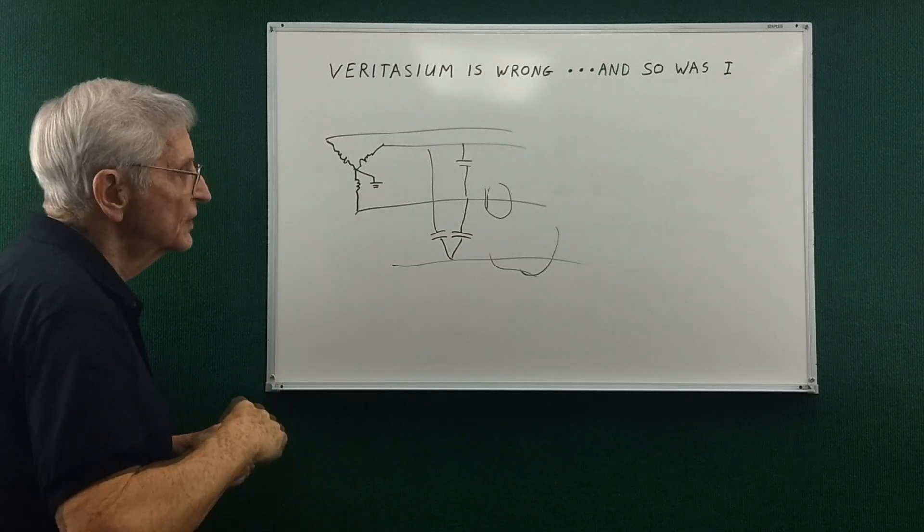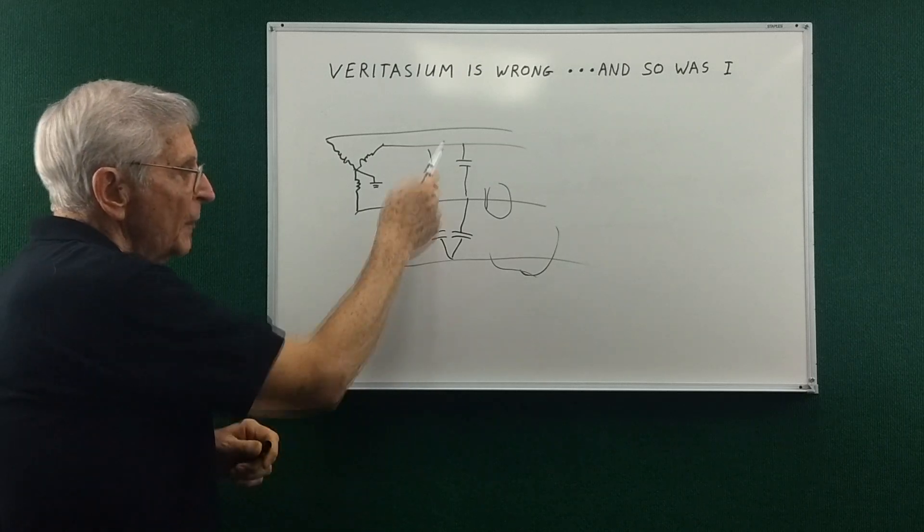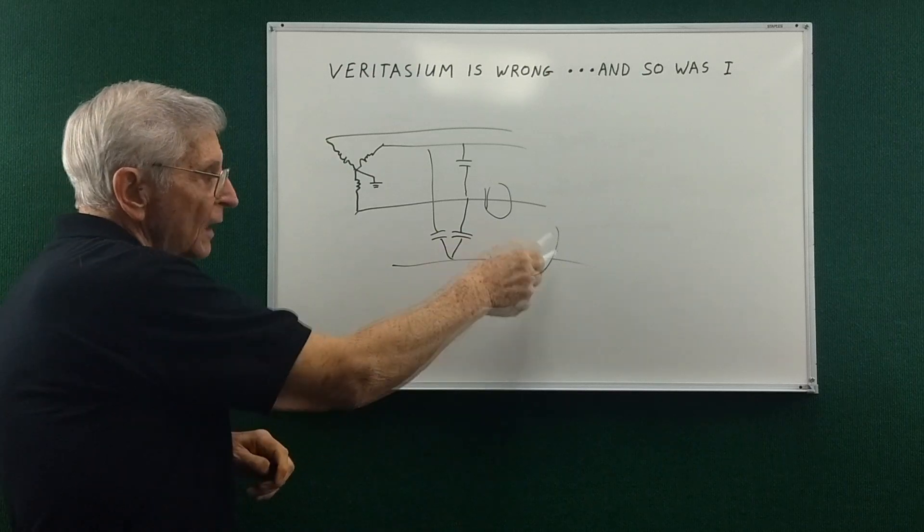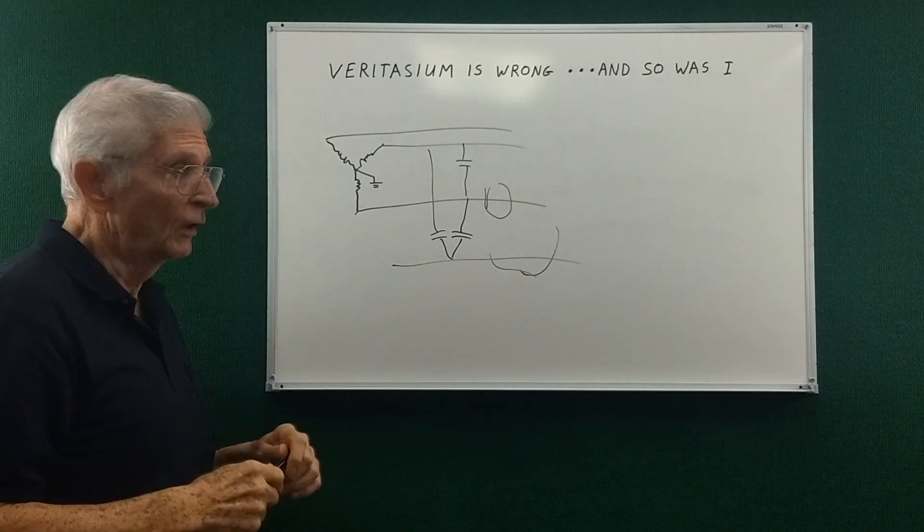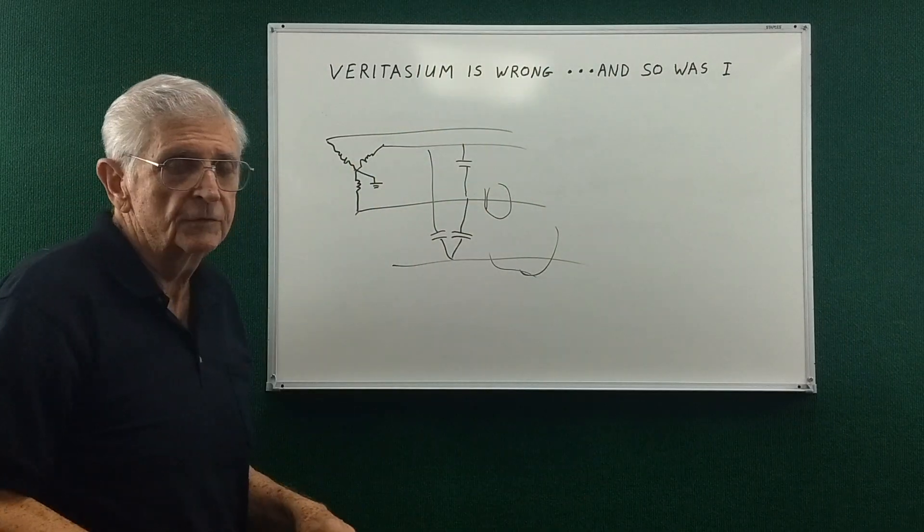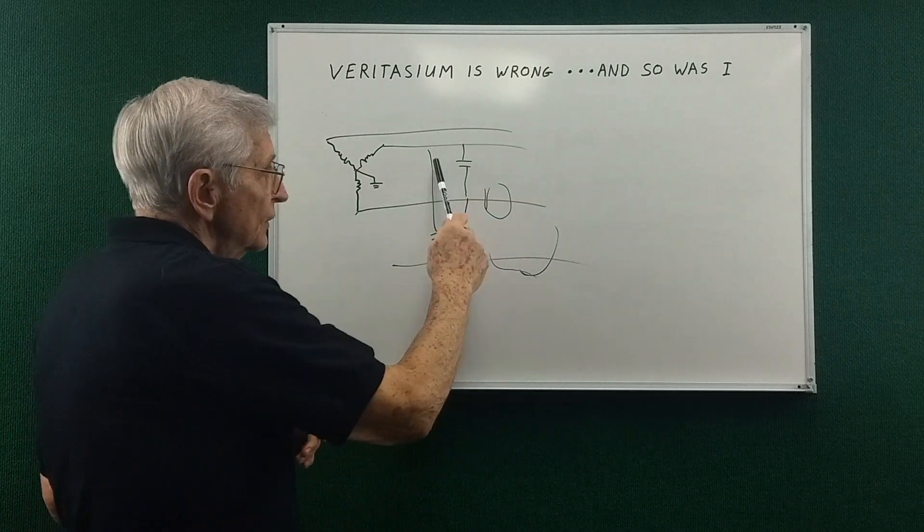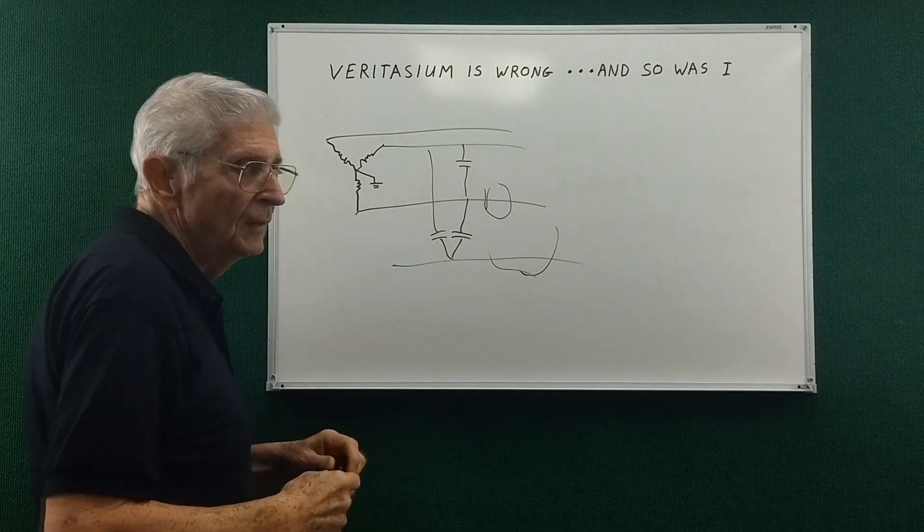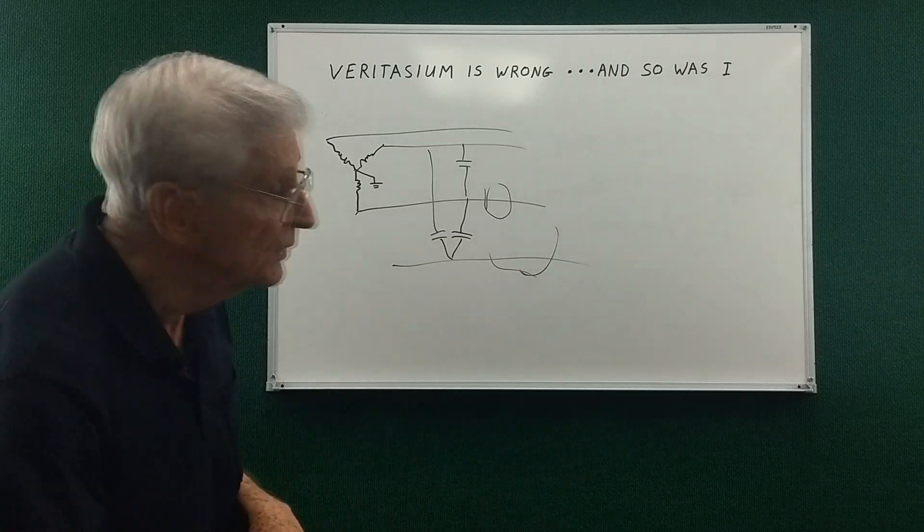So there's losses with AC transmission lines. Capacitive coupling to ground induces currents which are losses. Also the magnetic fields are radiating out into space. So there's a lot of losses associated with transmitting power through transmission lines to homes and businesses.